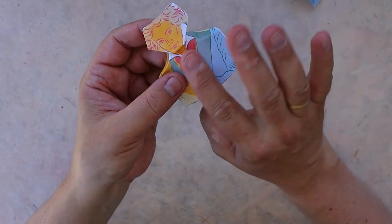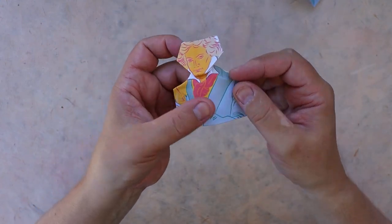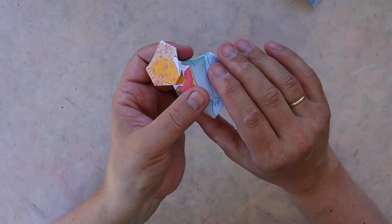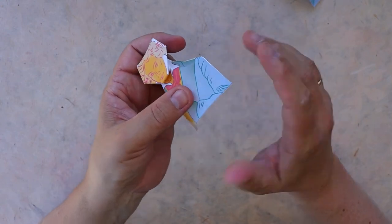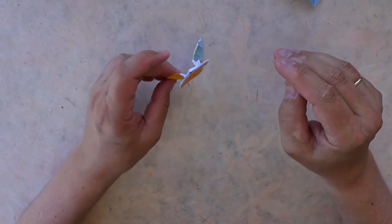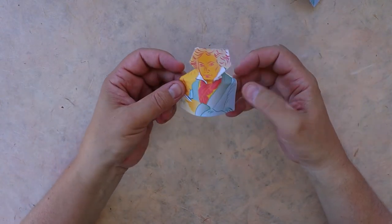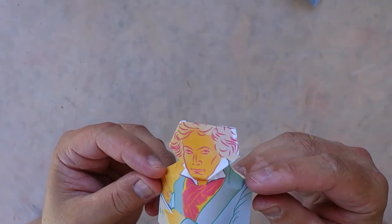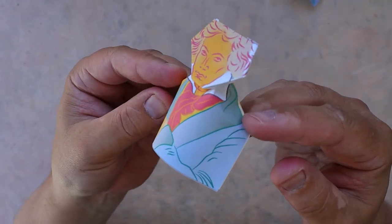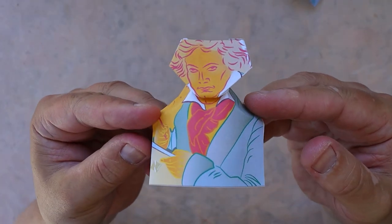And then just make a round shape here to make the model stand like so. And that's it, your first Beethoven is done.